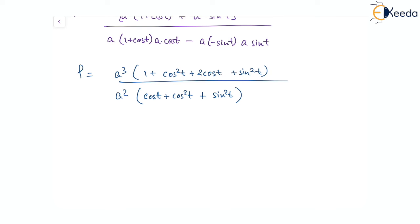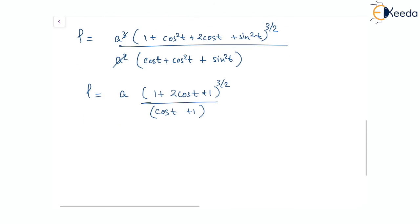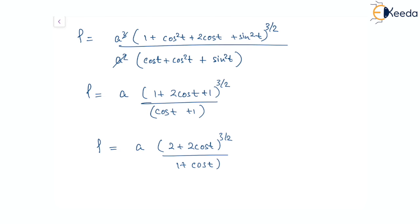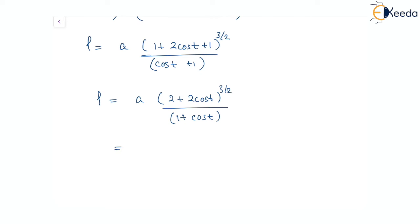Since sin squared t plus cos squared t equals 1, the denominator simplifies. After cancellation, we get a times of 1 plus 2 cos t plus 1 divided by 1 plus cos t, raised to the power of 3 by 2. This becomes a times of 2 plus 2 cos t to the power of 3 by 2 divided by 1 plus cos t. Taking 2 outside: 2 to the power of 3 by 2 times 1 plus cos t to the power of 3 by 2, divided by 1 plus cos t.